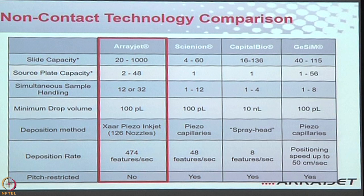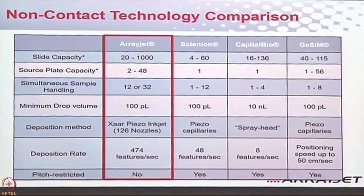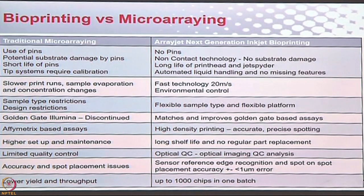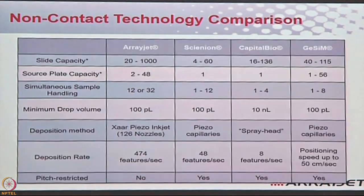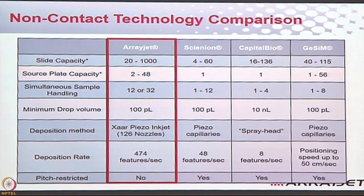People ask whether ArrayJet is the only non-contact printing option. All competitors are non-contact, so no one uses pins — everyone uses a print head mechanism. However, there are large differences in how each system handles samples. Our deposition rate is the fastest in the world. If assays need to be done in a tight timeline and you're not getting success with pipetted ELISAs, you can quickly run an inkjet printer, print samples on as many slides as you want, and process those assays.